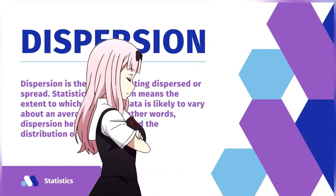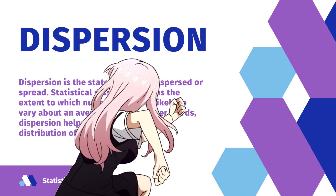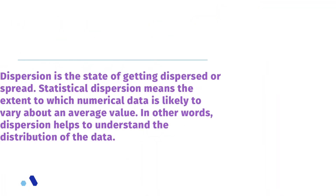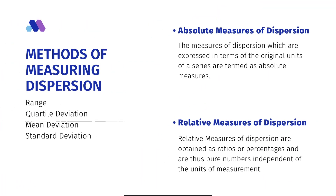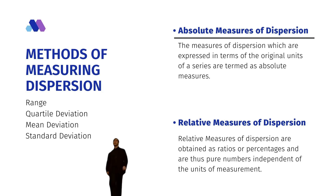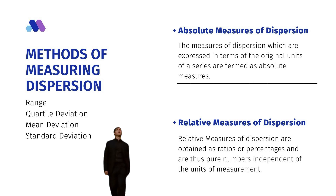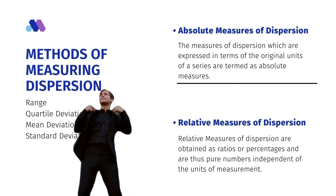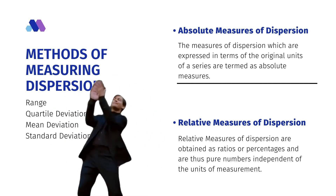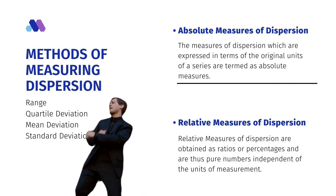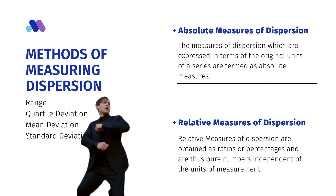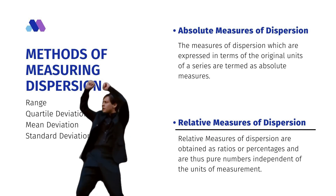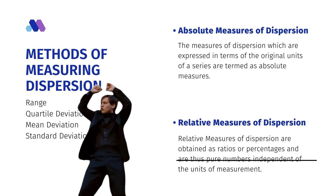Methods of measuring dispersion: range, quartile deviation, mean deviation, standard deviation. Absolute measures of dispersion are the measures expressed in terms of the original units of a series.